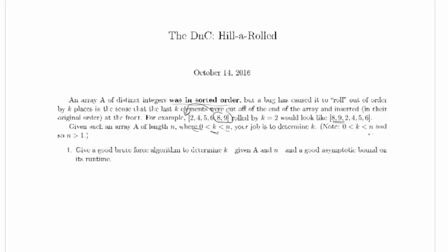Note that 0 < k < n, and so n > 1. Since k and n are both integers, k greater than 0 means k is greater than or equal to 1, and n greater than k means n is greater than or equal to 2, so n is greater than 1.